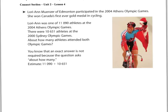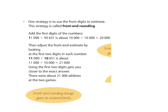Estimating is a very important skill. You need to estimate when it says 'about how many.' So we're going to estimate the sum of 11,090 and 10,651. The first strategy is called front-end rounding — we use the front digits only to estimate. We add the first digit of each number and fill the rest with zeros, so both become 10,000: 10,000 plus 10,000.